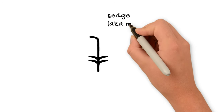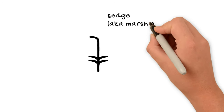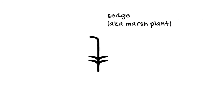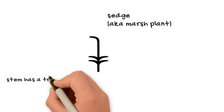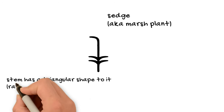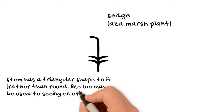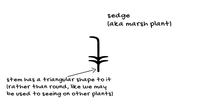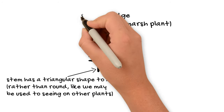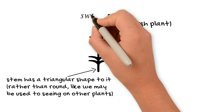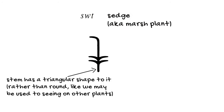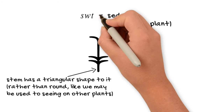A sedge is a type of plant that grows in marshes, usually in groups or tufts, and has a triangular, jointless kind of stem. In ancient Egyptian, this sign could be used as a logogram — that is, for the whole word — for the word 'suit,' meaning sedge, as you might expect.